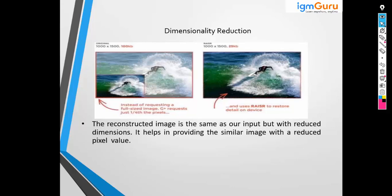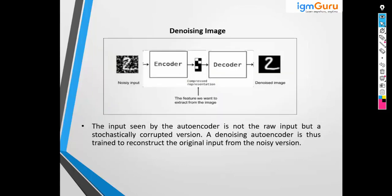Autoencoders are somewhat like GANs, where we have a discriminator and generator competing with each other, resulting in multiple GAN architectures like DC-GAN and Cycle-GAN. Similarly, in autoencoders the core concept remains the same, but based on the use case we do some modifications to the concept and get different types of autoencoders. We will also discuss how things change based on the type of autoencoder.